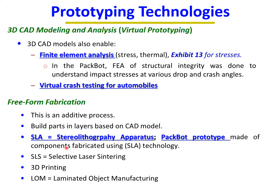Free-form fabrication technologies include SLA (stereolithography apparatus), SLS (selective laser sintering), 3D printing, and LOM (laminated object manufacturing). These use non-final materials such as polymers and plastics. All of these are modern manufacturing technologies allowing you to quickly produce a prototype from a CAD drawing — whether to demonstrate function, shape, or part assembly.